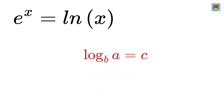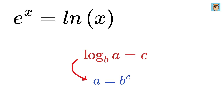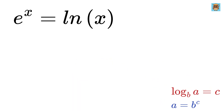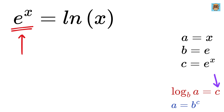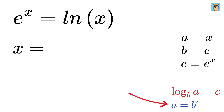Let us see how. Using the logarithm rule, we know that if the log of a with base b equals c, then we can also write a as b raised to the power c. So, looking here, we have a as x, the base b is e, and c is e to the x. So we get x equals e to the e to the x.